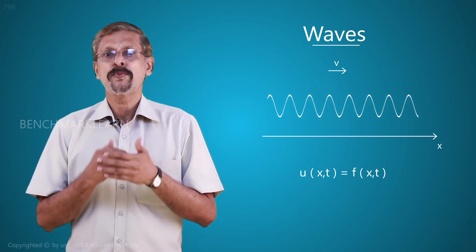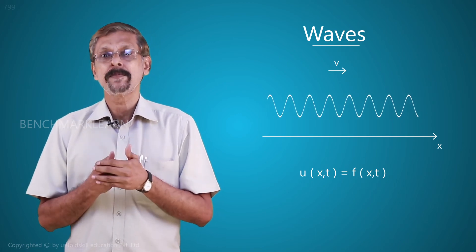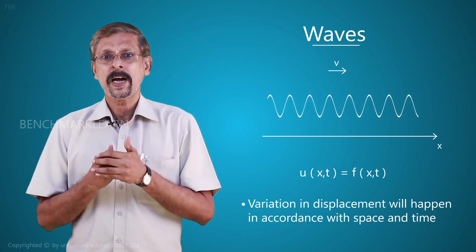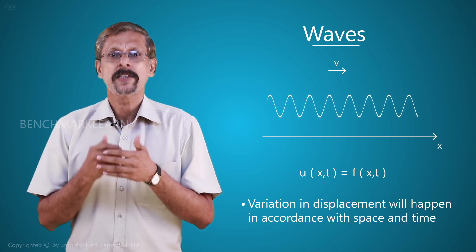f(x,t) means a function of x and t. That means the variation will happen in accordance with space and time.